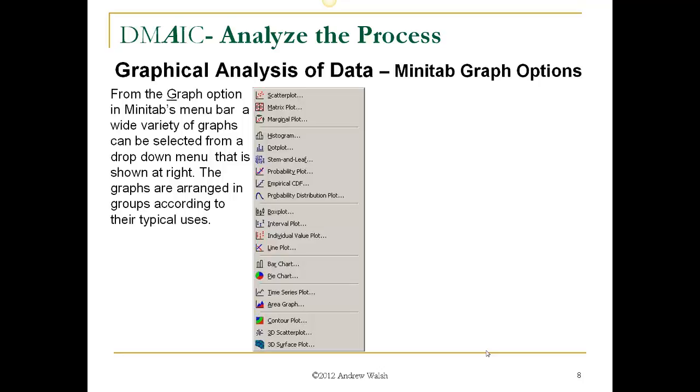Now Minitab offers a lot of graphical analysis, and from the graph option in Minitab's menu bar, you can pick a lot of them. The upper quadrant is used for correlations, scatter plot, matrix plot, marginal plots. The second one is used for plotting distributions, histograms, dot plots, stem and leaf, probability plots, empirical cumulative distribution functions, and probability distribution plots.